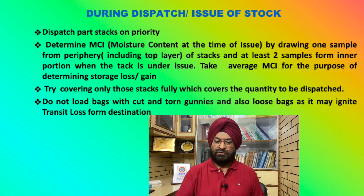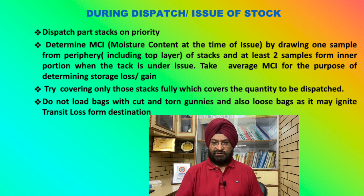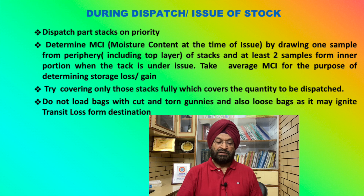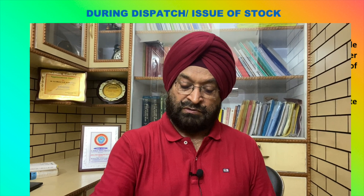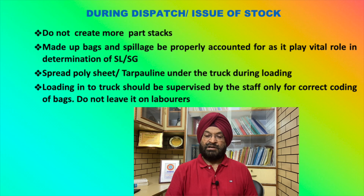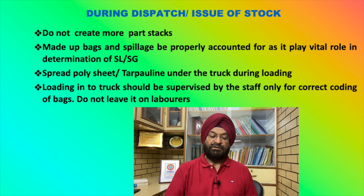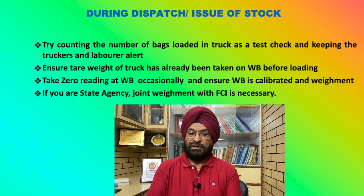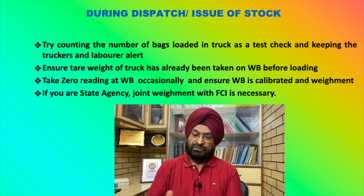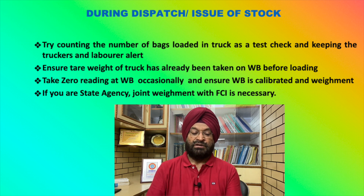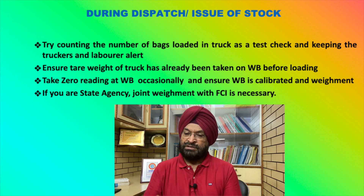Generally the FCA does not have sufficient staff to supervise, so it is you who must record the MCi at the time of issue and inform the FCA. Do not load bags with cut or torn gunnies or loose bags, as this may invite transit losses which will be converted to transit loss. Only made-up bags should be loaded, and spillage must be properly counted. Spread a polythene sheet under the truck during loading. Loading in the truck must be supervised by staff for correct bag placement; do not leave it to the laborers as they may load more bags than authorized. Test-check by counting the number of bags loaded in the truck.